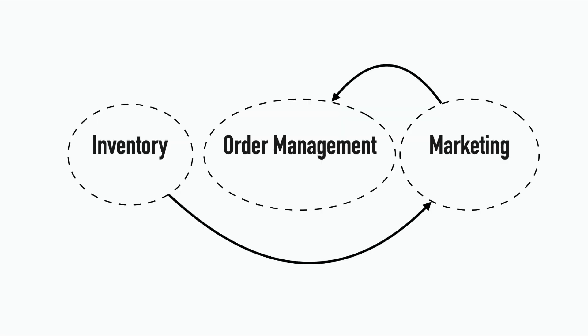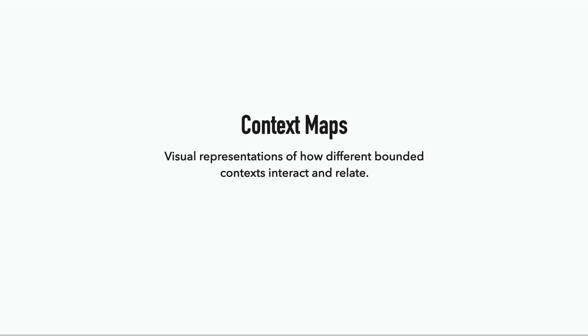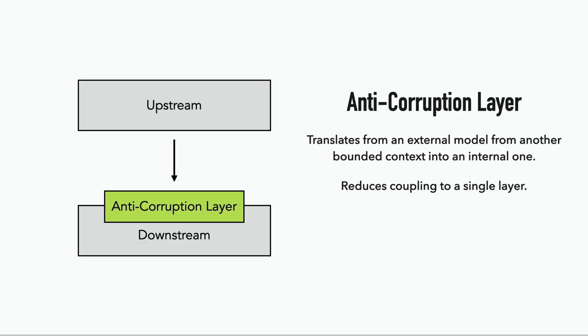So by understanding the communication patterns between our bounded contexts, we can also understand the relationships between the teams and any dependencies that we need to factor in. And context maps let us visualize the relationship between bounded contexts and model how they should interact with each other. One popular pattern is the anti-corruption layer, which translates entities from another external bounded context into an internal one, protects our core domain logic from changes from upstream, reduces the coupling between the two bounded contexts to just a single layer, and minimizes the blast radius of any unwanted changes from the upstream system.